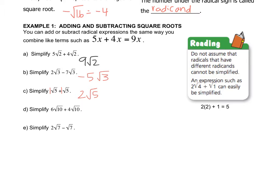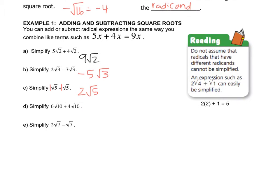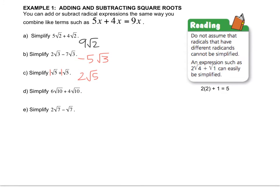You don't add the radicals — you keep them just like you would keep a variable. 6 radical 10 plus 4 radical 10 is 10 radical 10. And 2 radical 7 minus 1 radical 7 is 1 radical 7. Just like we would treat that with variables, 1x is better written as x, so 1 radical 7 is better written as radical 7. Now just because you see a radical doesn't mean that you can't reduce it.